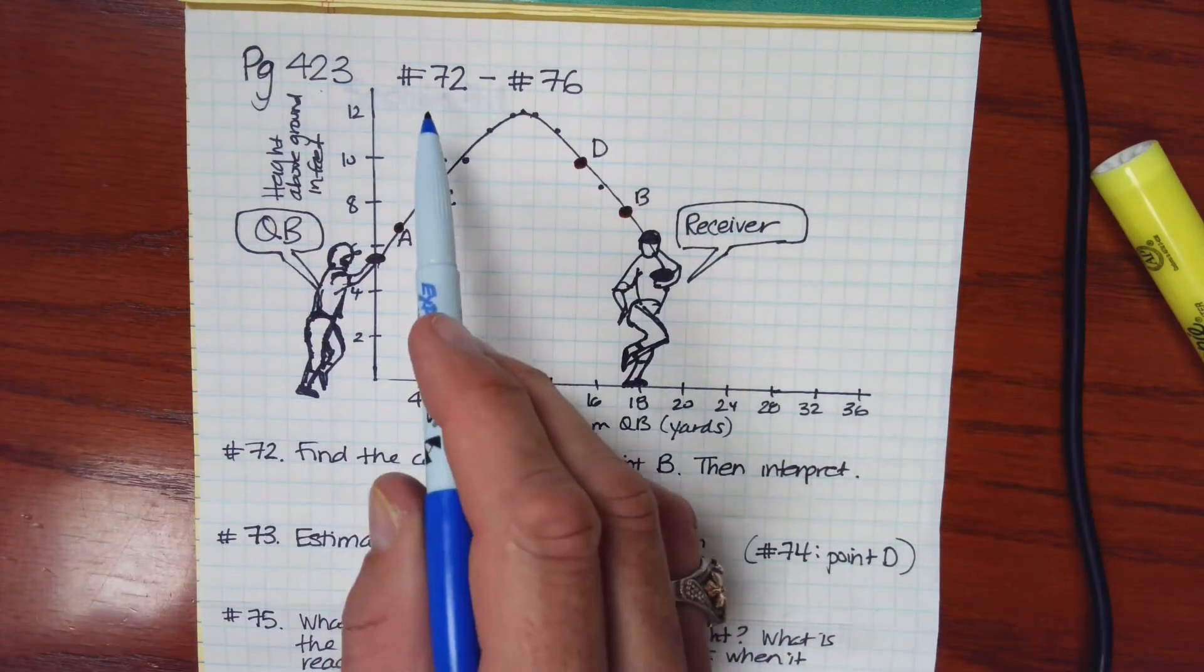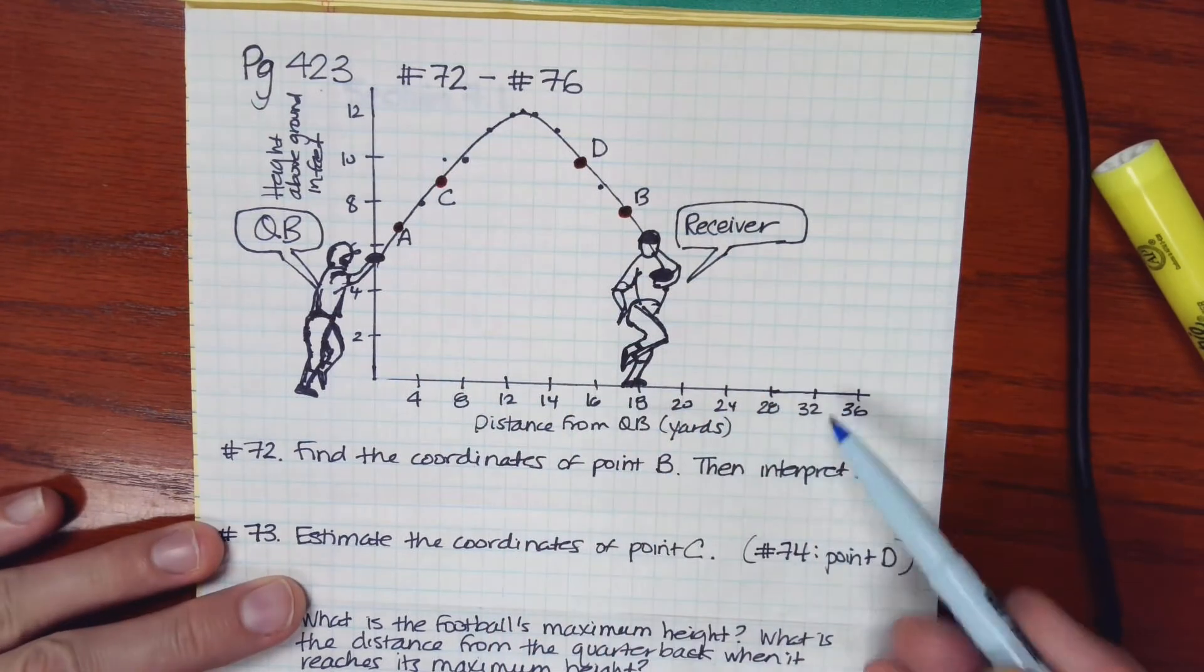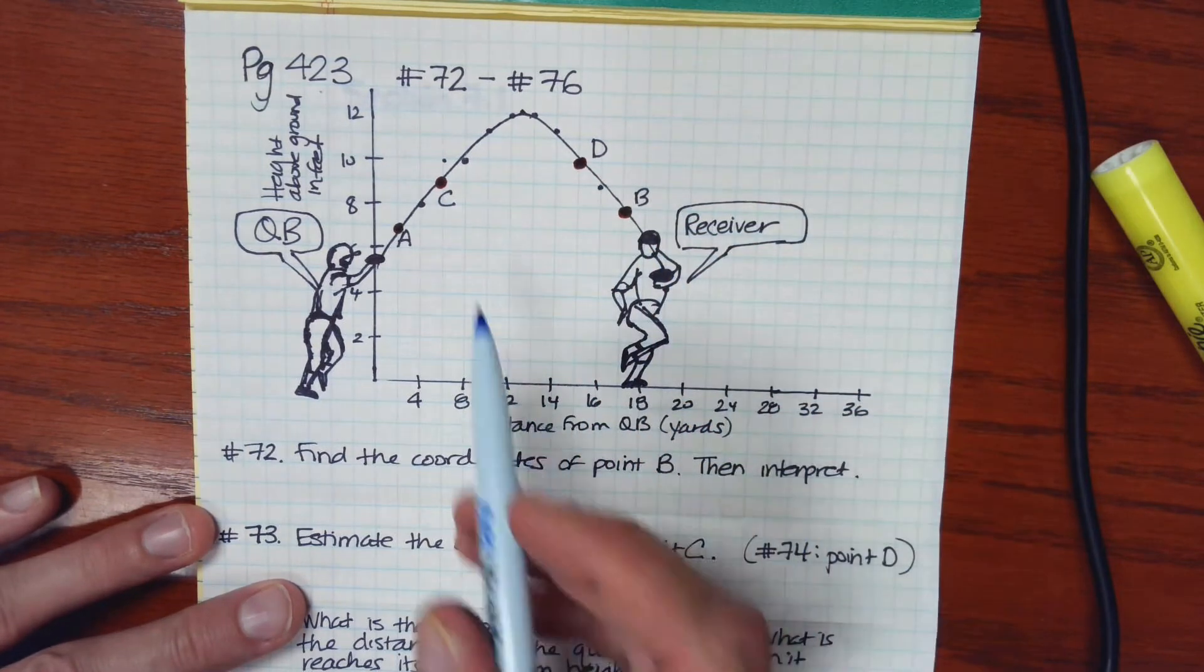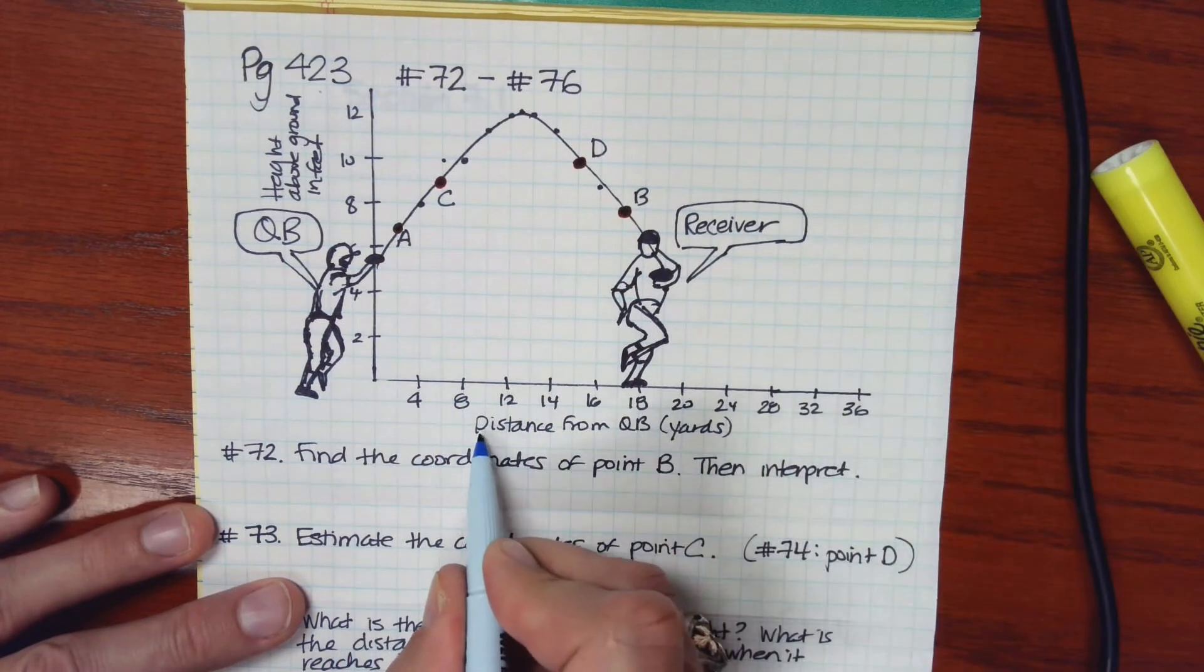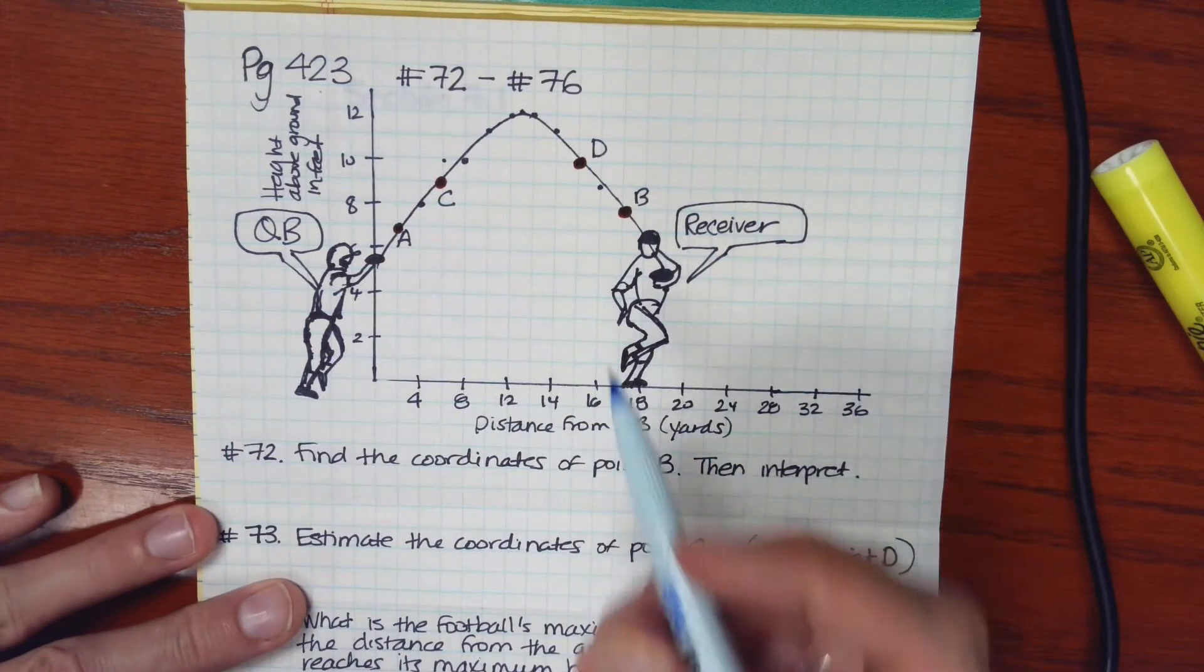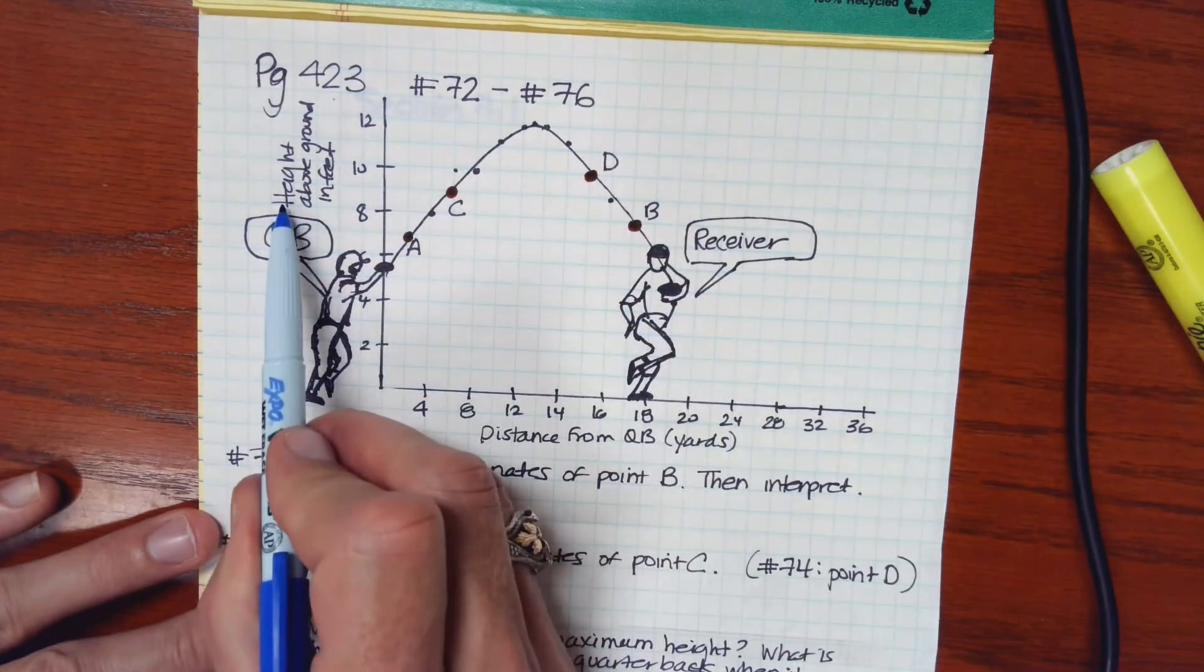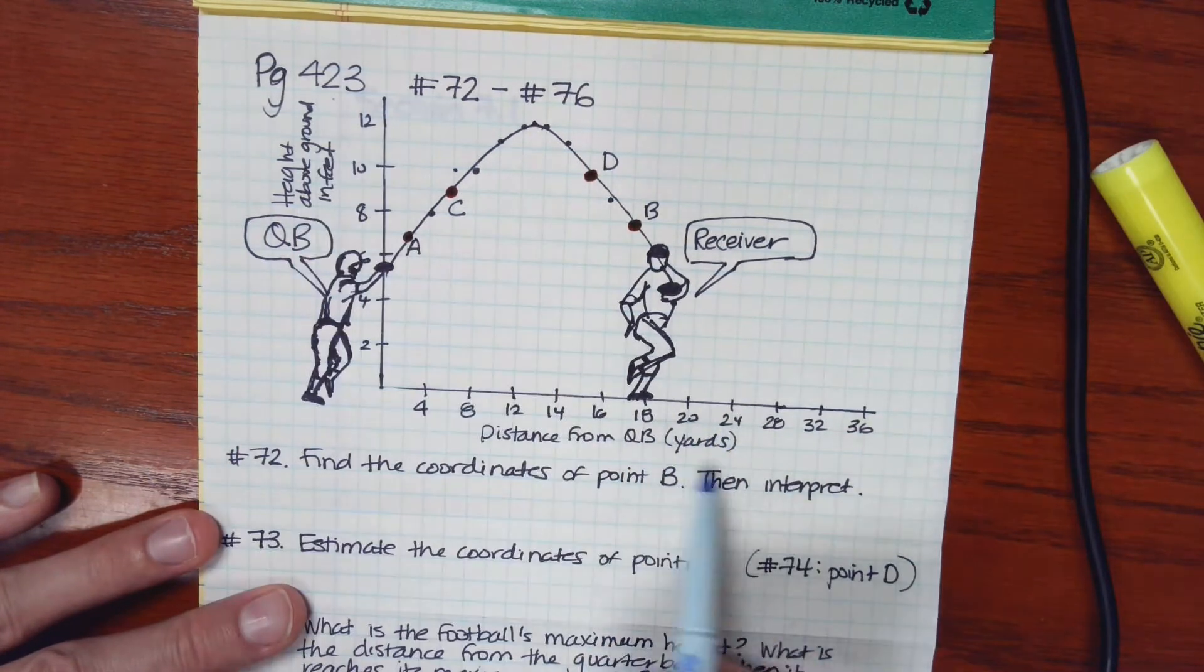This is used to answer questions 72 through 76. We have a graph and there is a function here that looks like a parabola and there are some points on the parabola along the horizontal or x-axis. These are a distance from the quarterback in yards and looking up our vertical axis where we have these marks 2, 4, 6 and so forth. Those are the heights above ground in feet. So these are feet, these are yards.